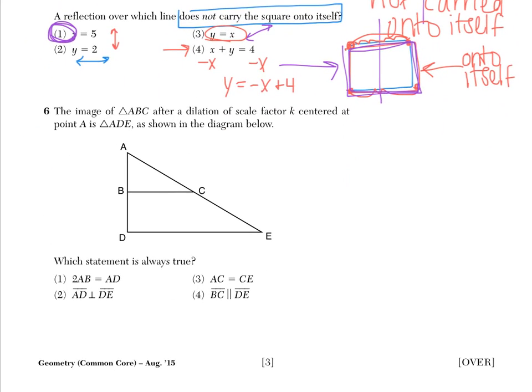Number 6 says, the image of triangle ABC after a dilation of scale factor k is centered at point A, or centered at point A is triangle ADE as shown in the diagram below. Which statement is always true? So what we know here again is that a dilation occurred centered at point A. So we know that this distance is, say, x, which means that this distance is 2x if k were to be 2.